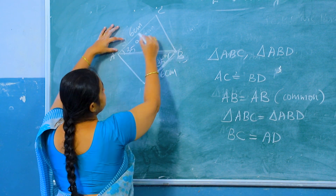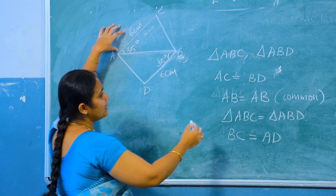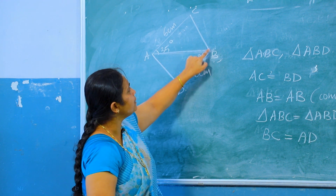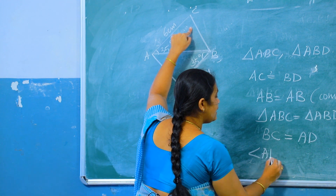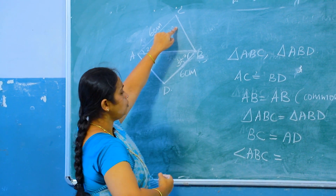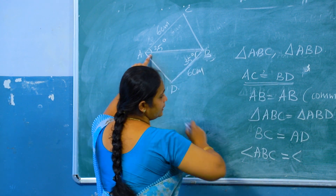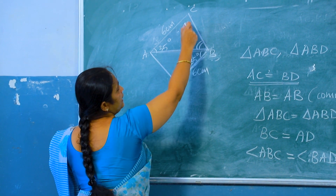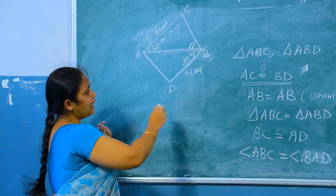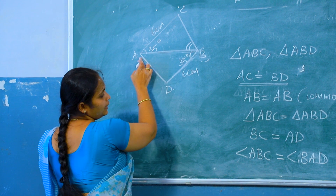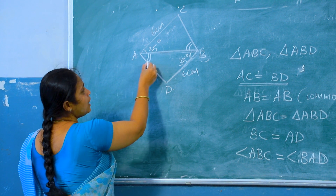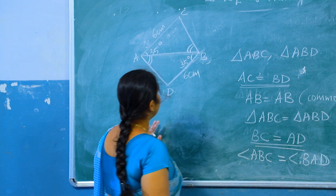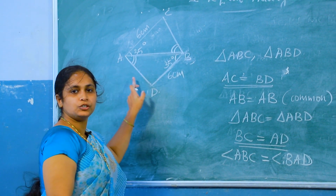Then, what about the angles? Here, AC equal to 6 centimetre. The angle opposite to AC is angle ABC, and the angle opposite to BD is angle BAD. These two angles are equal. That is, we got BC equal to AD and BC equal to AD.